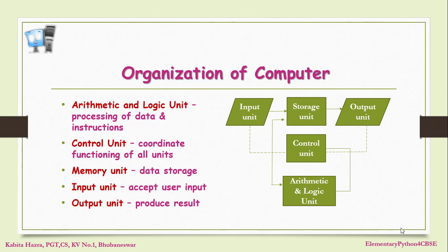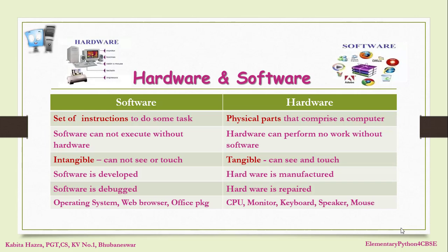The two major components of a computer system are hardware and software. Hardware are the physical parts that comprise a computer, whereas software is a set of instructions given to do some tasks. Software cannot execute without hardware, and similarly hardware cannot perform any work without software. We cannot see or touch software, whereas hardware we can see and touch — they are tangible, whereas software is intangible.